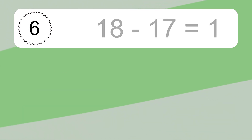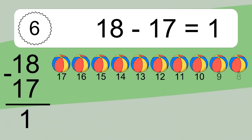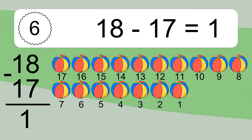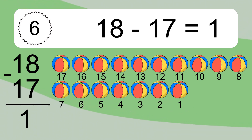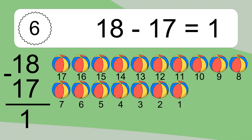18 minus 17 equals what? 18 minus 17 equals 1. Let's count it: 17, 16, 15, 14, 13, 12, 11, 10, 9, 8, 7, 6, 5, 4, 3, 2, 1.